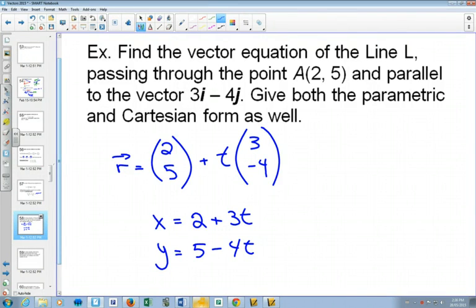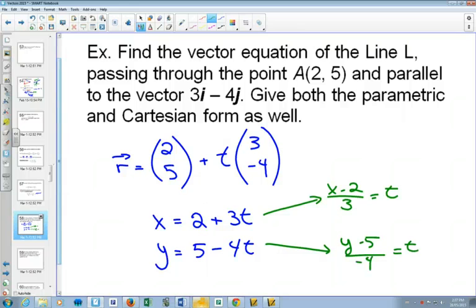Now, both of these you could solve for t. This one, if you subtracted 2 and divided by 3, you would get t. And this one, if you subtracted 5 and divided by the negative 4, you would get t. So here we have our parametric forms.